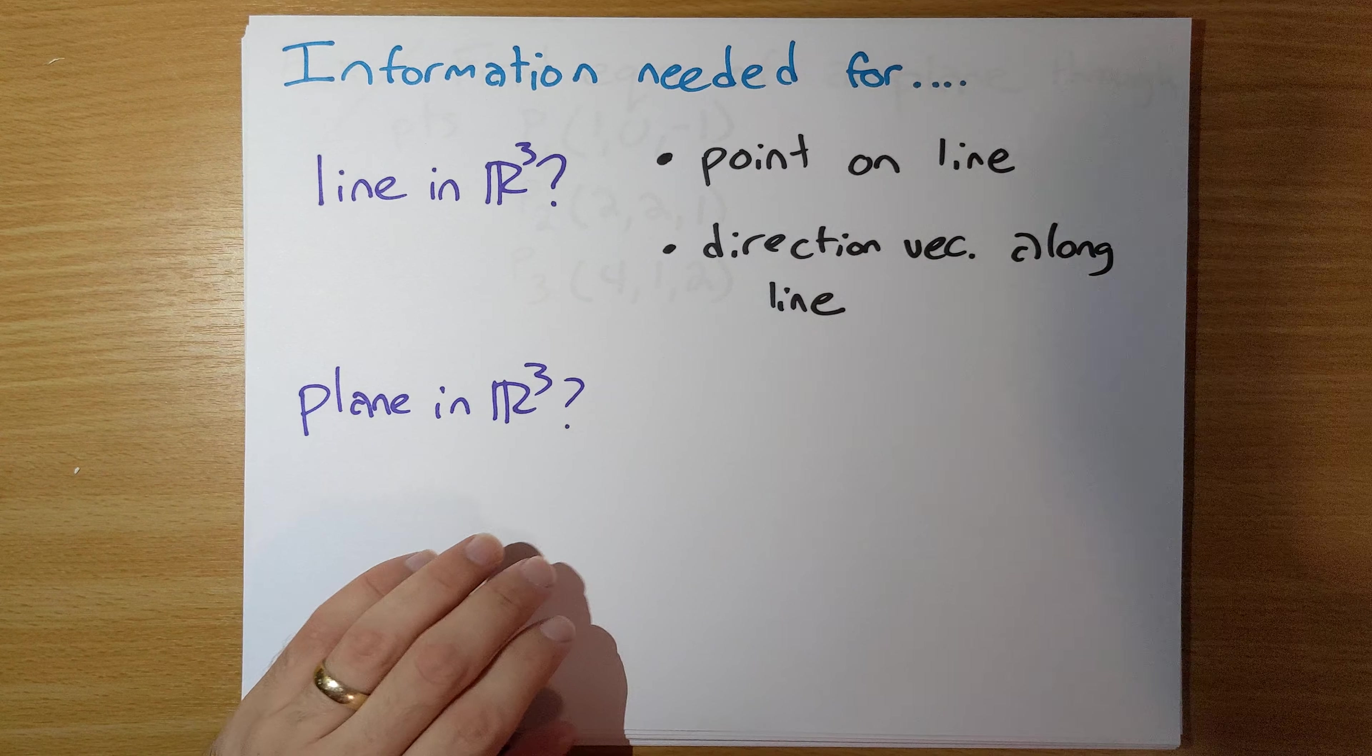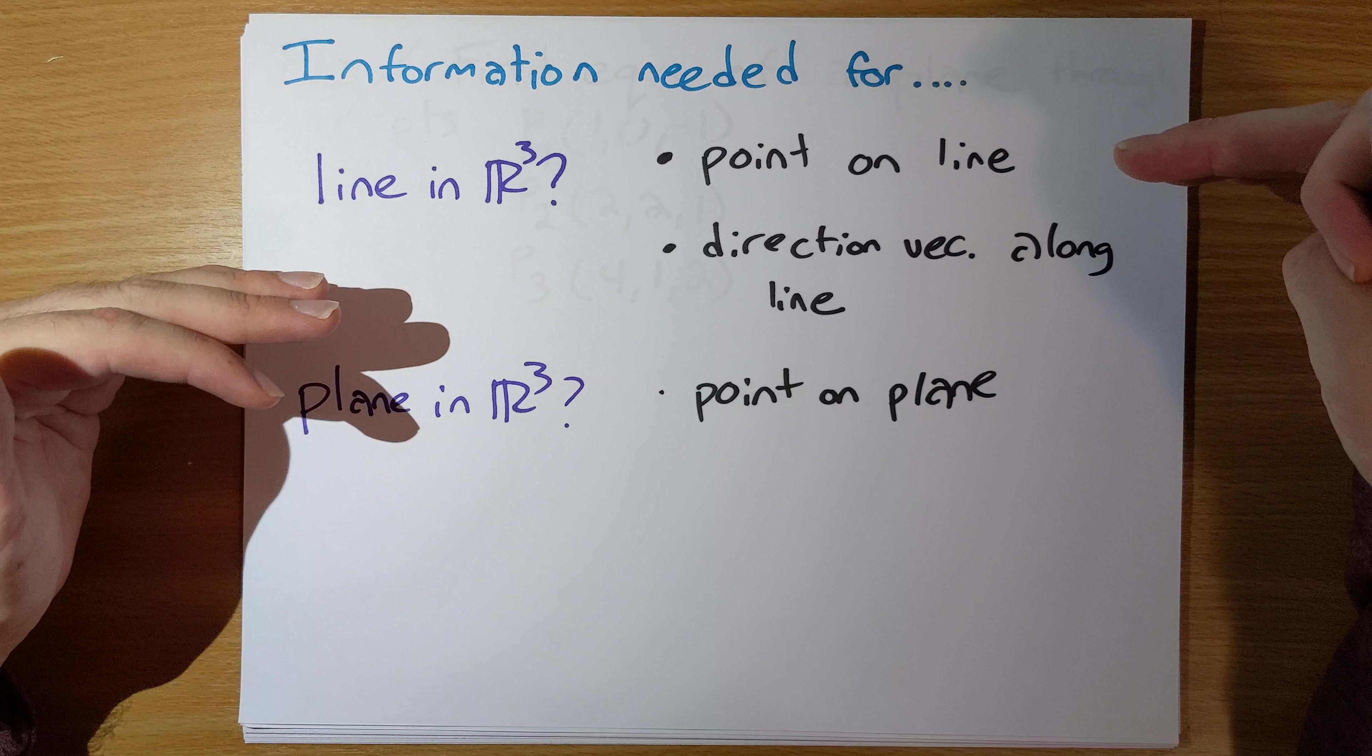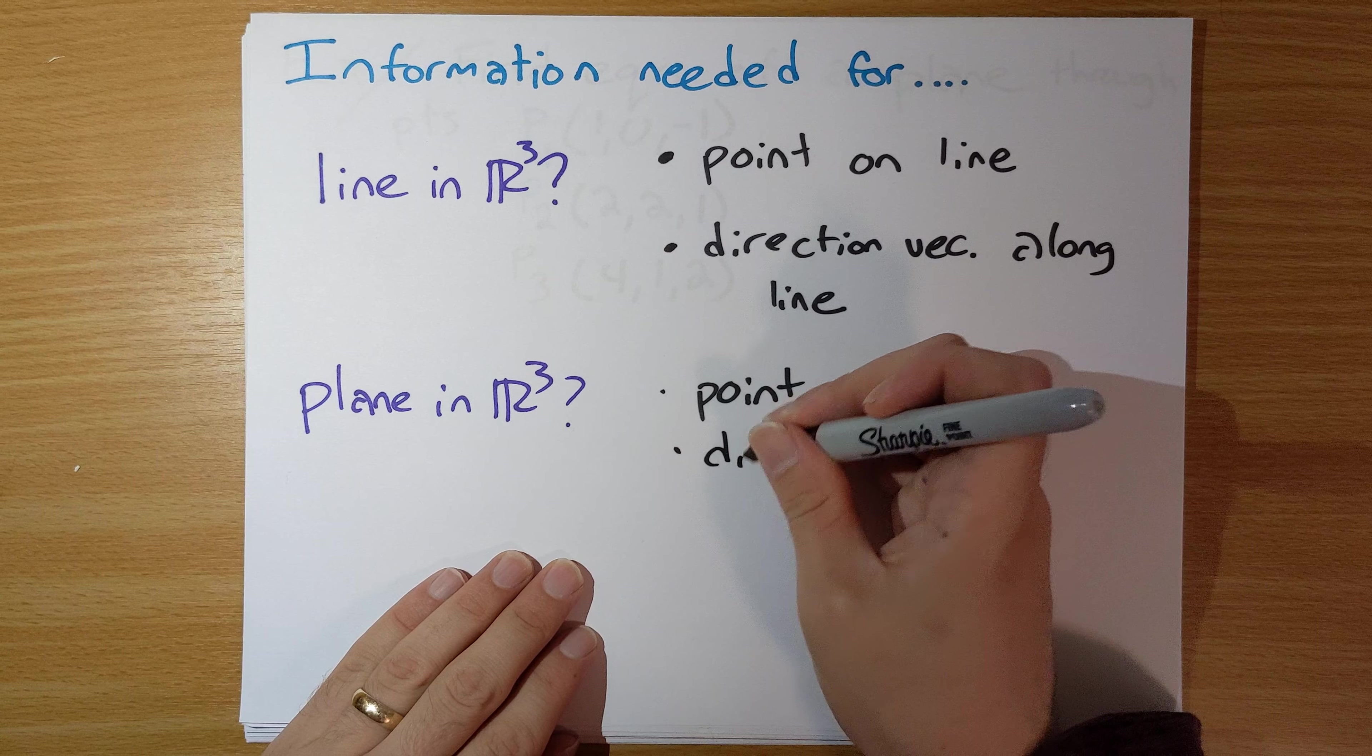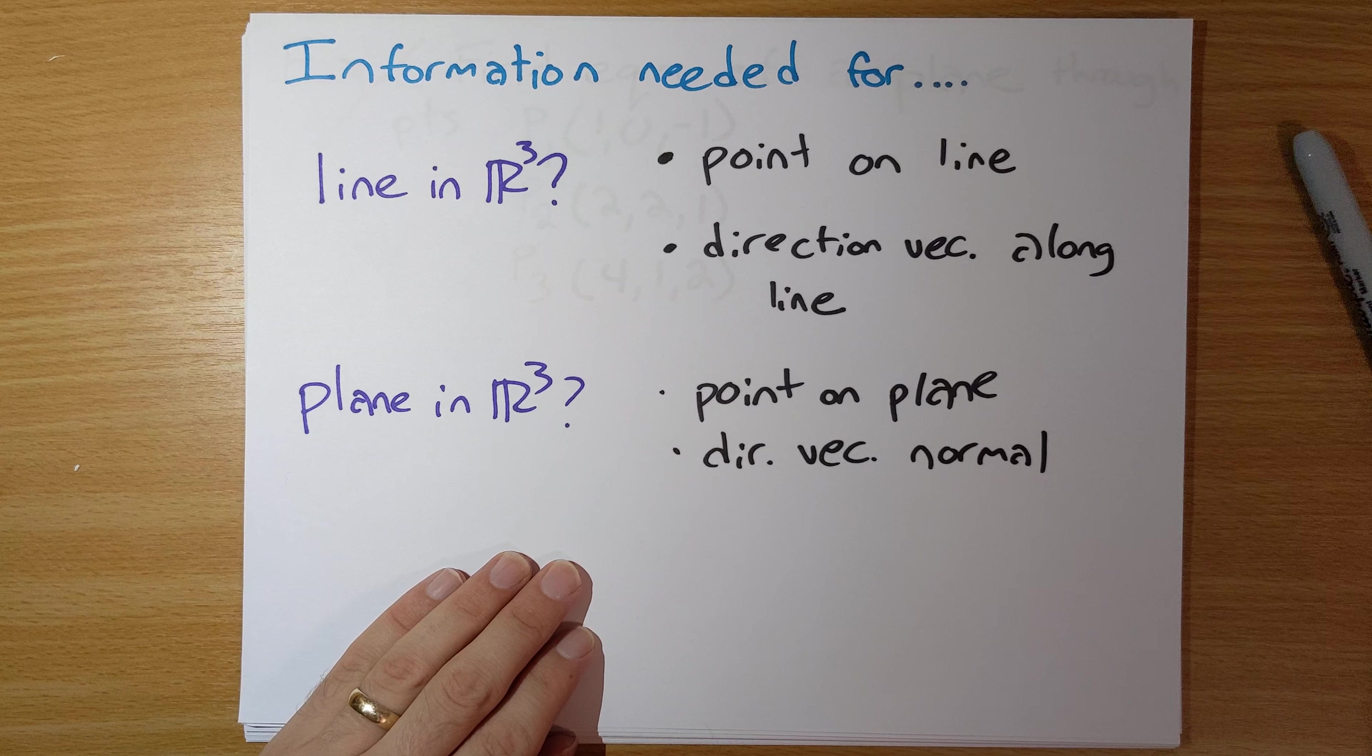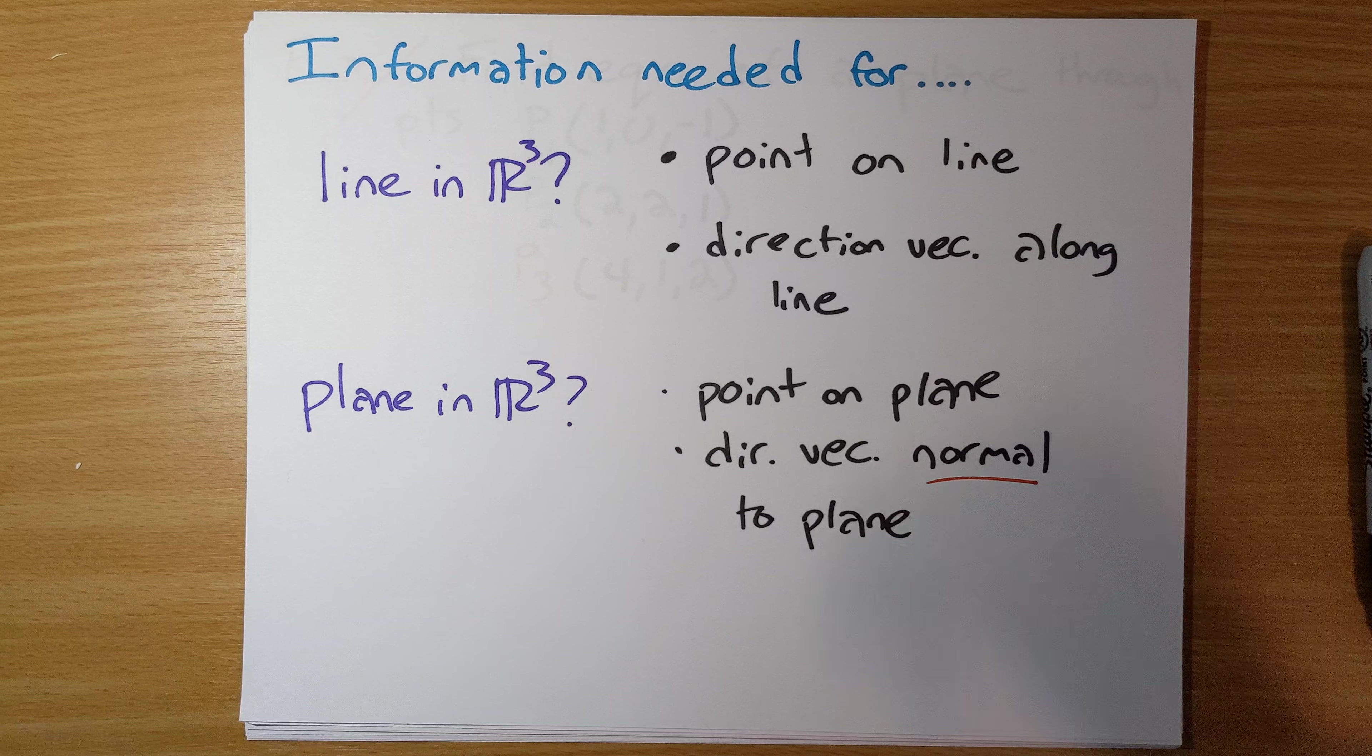So we need a point on the plane. And again, just like point on the line, we can use any point on the plane that we want to. And then we want a direction vector that is normal. Let me underline that, to the plane. You can also think of direction vectors orthogonal to the plane.